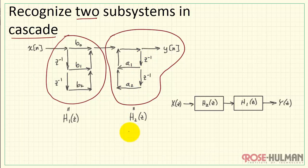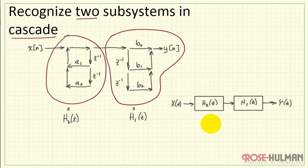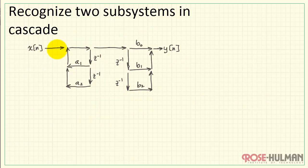Let me interchange these two subsections of the flow graph. Now, let's see what happens as a result of this interchange. Let me keep track of this intermediate signal as W of N.